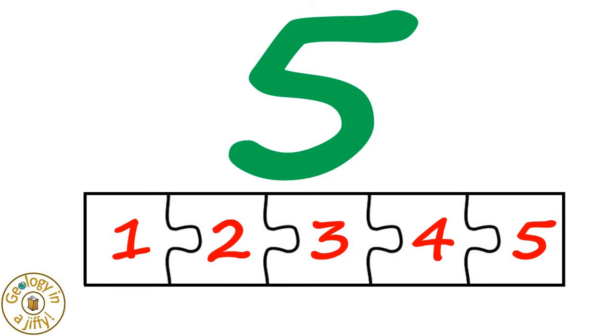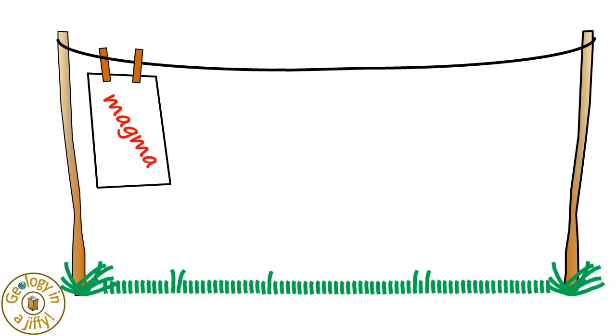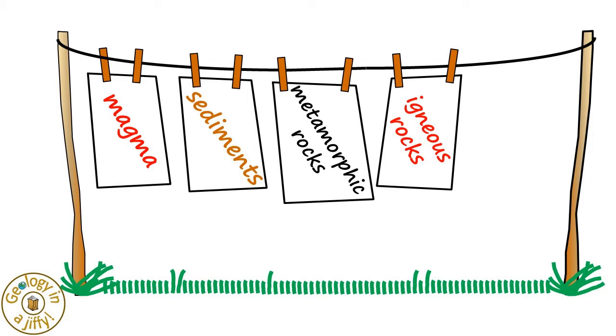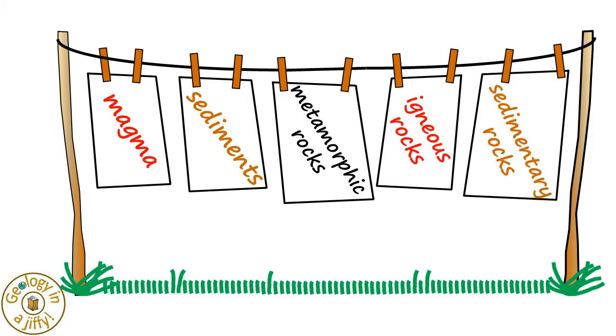The Rock Cycle can be learnt by thinking of it being broken up into five main parts. These sort of link together, a bit like a jigsaw. The five parts are magma, sediments, metamorphic rocks, igneous rocks, and sedimentary rocks.